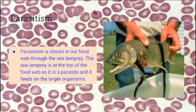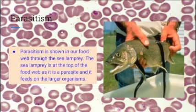Parasitism is another symbiotic relationship within our food web, in which one organism, the parasite, benefits while the other is harmed. In our food web, parasitism is shown through the sea lamprey. The lamprey feeds on larger fish, killing them, and takes all the nutrients from the host. In the picture is an example of a sea lamprey latched onto a fish, sucking the nutrients out of it. Once the lamprey is latched on, there isn't much the fish can do to get rid of it.